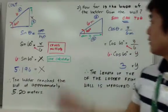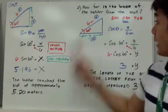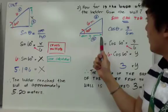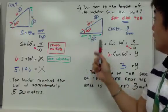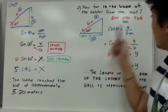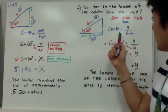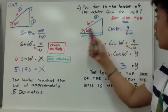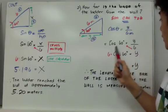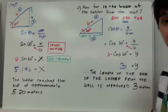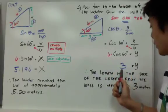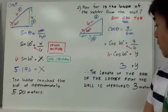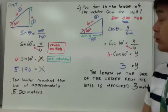To answer the second question — how far is the base of the ladder from the wall — we have our triangle with the hypotenuse of 6 meters, and now we're looking for y, the base distance from the wall. Since we have the hypotenuse and the adjacent side, we use cosine: cosine theta equals adjacent over hypotenuse, giving us y over 6. By cross multiplication, cosine 60 times 6 equals y, which gives y equals 3. The base of the ladder from the wall is 3 meters, using SOH CAH TOA.